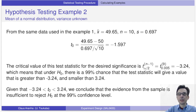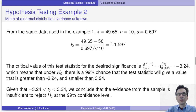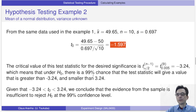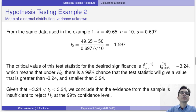Plugging in the values, we calculate the T statistic as minus 1.597. For this confidence level the critical zone is minus 3.24 to 3.24, meaning under the null hypothesis there is a 99 percent chance the statistic falls between these two values. Since our T statistic falls inside this threshold, we again conclude that the evidence of the experiment is not strong enough to reject the null hypothesis at this confidence level.